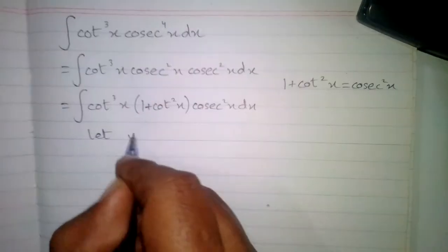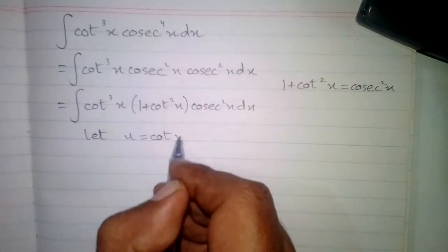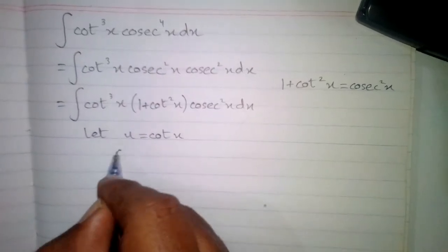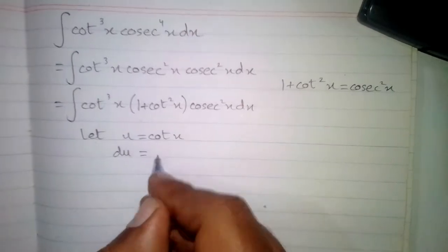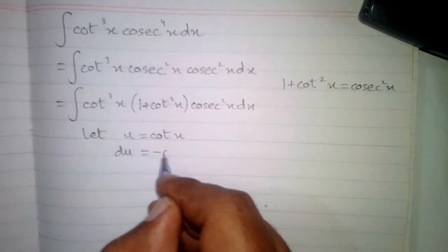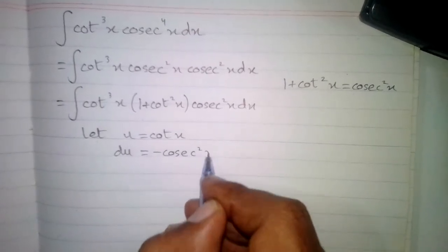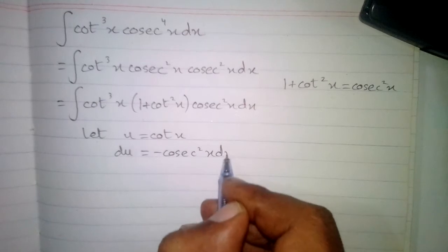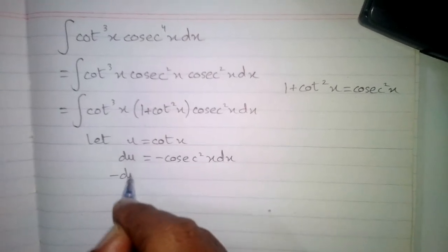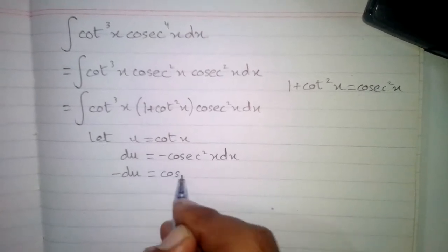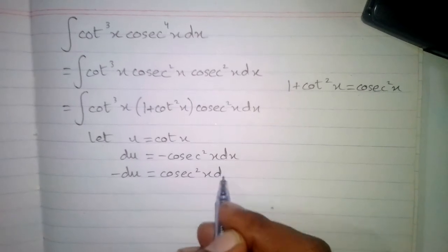Now let u equal cot x. The differential du is equal to the derivative of cot x, which is minus cos square x dx. This can be written as minus du equals cos square x dx.